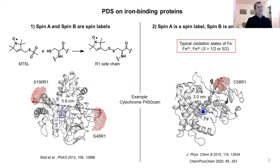Alternatively, we can replace one of the spin labels by an intrinsic iron center. This possibility comes from the fact that one of two typical oxidation states of iron, namely Fe³⁺, is paramagnetic and can be found either in the low-spin state of spin number one-half or in the high-spin state of spin number five-halves.